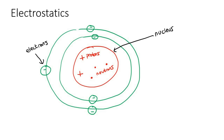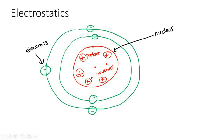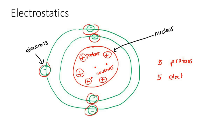By looking at the number of positives and negatives, you are able to work out the charge. In this atom we have five protons and five electrons. Protons are positive, electrons are negative.